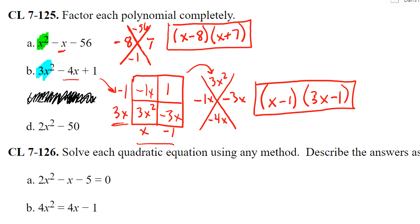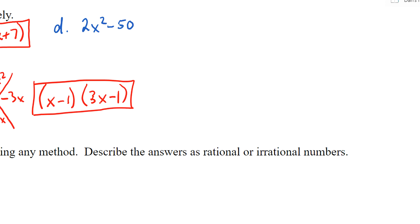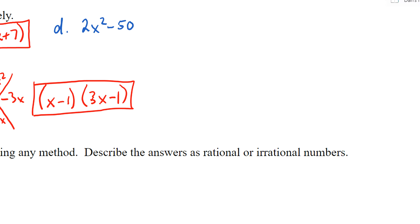Now problem D — this one's a little bit tricky. To factor completely, we need to see if there's a number that can be factored out of both terms. What number can I take out of 2x squared and negative 50? Two. So I factor a two out, giving me 2(x squared minus 25).